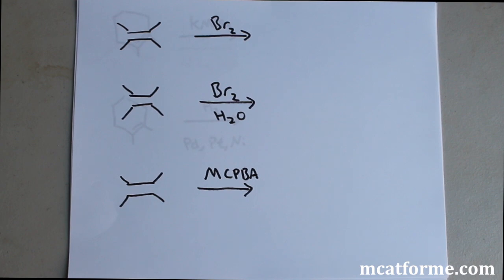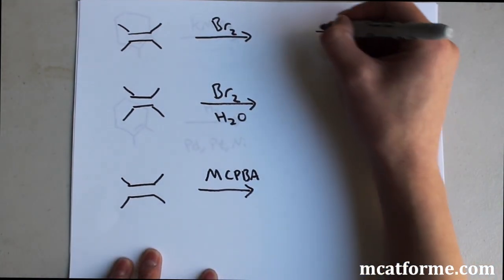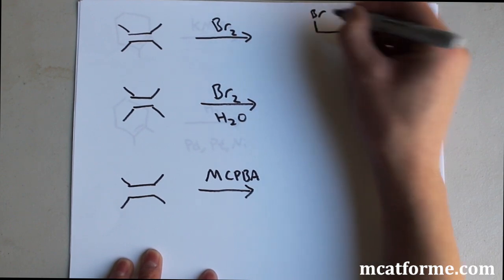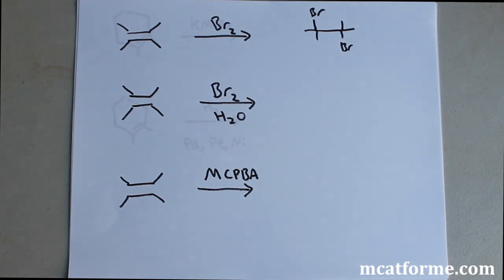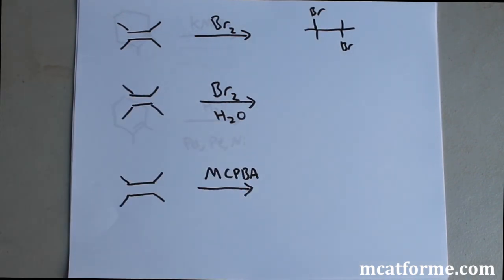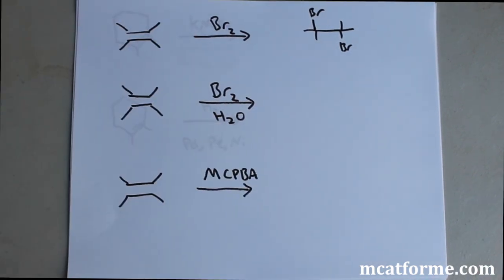The first one is the bromination reaction and what's going to happen is we are going to get Brs added, two of them, anti to each other. So they're not going to add on the same carbon, they're going to add opposite and anti to each other.